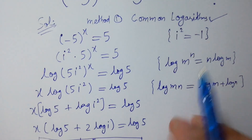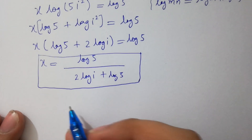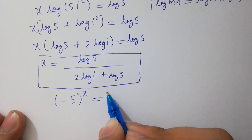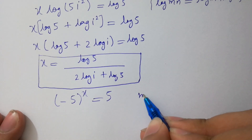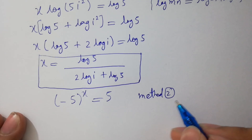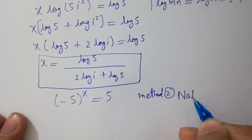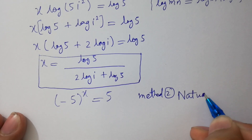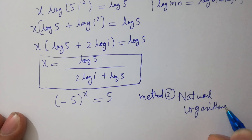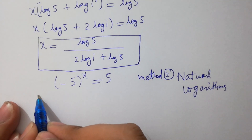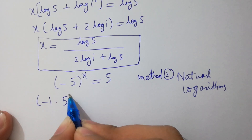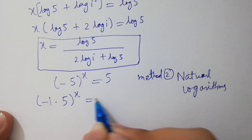Now solve this question, minus 5 to the whole power x equals 5, by Method 2, which is natural logarithms. It will be equal to minus 1 times 5 to the whole power x equals 5.